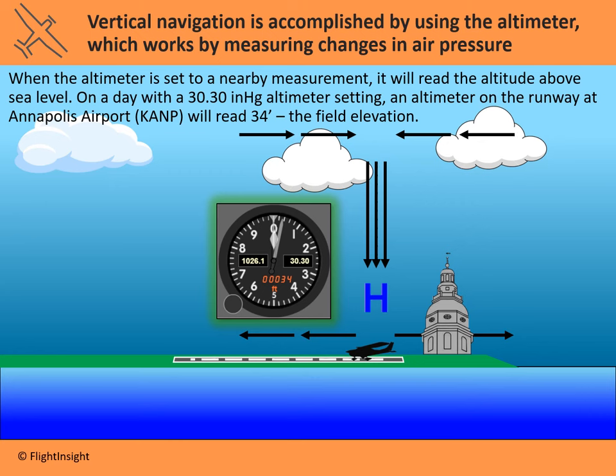Besides navigating over the surface of the ground, you're also going to need to navigate up and down. Vertical navigation is accomplished using the altimeter in the aircraft. The altimeter works off of changes in air pressure. Before I became a pilot, I thought you could tell what your altitude was over the actual ground, but that's just not the case with the standard equipment in your aircraft. The altimeter is reading changes in pressure.